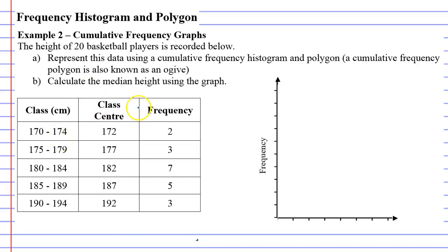Now, if we were just looking at the table here and I said to calculate the median, you would have a lot of trouble. And the reason being is when you look at it, you can see that the smallest height is between 170 to 174 centimetres and the taller players are between 190 and 194 centimetres.